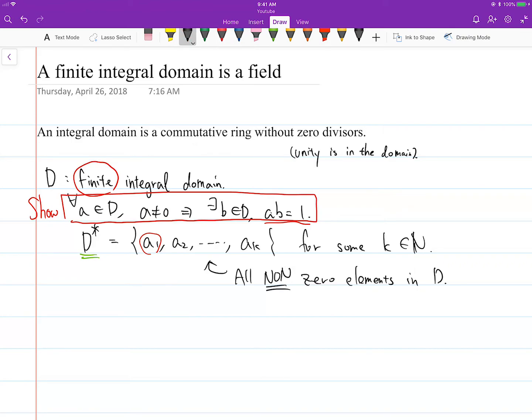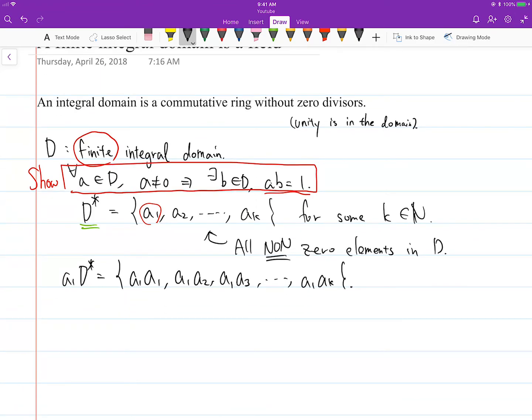What I'm going to do here is first create this set called A1 D star. I'm essentially just multiplying A1 to each element. And I claim that D star equals A1 D star. The reason for that is, first, D has no zero divisors, so A1 D star has to be a set of non-zero elements. So it has to be a subset of D star.